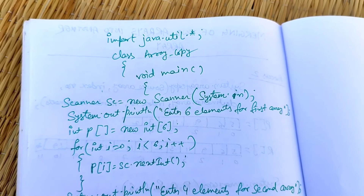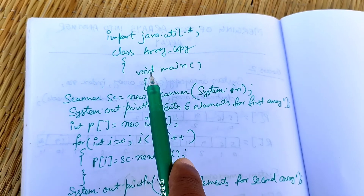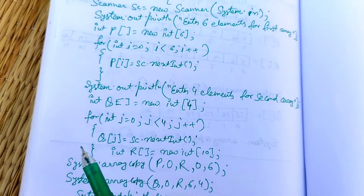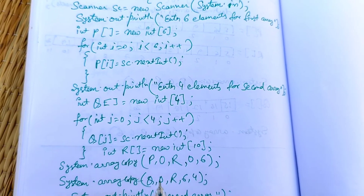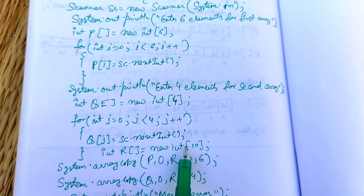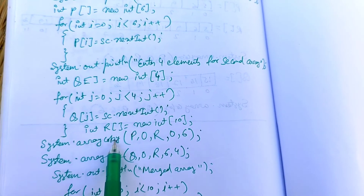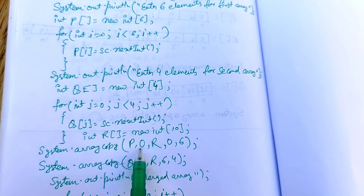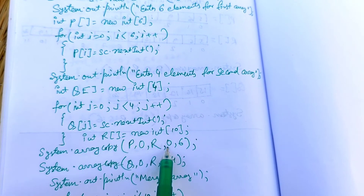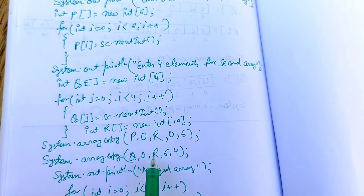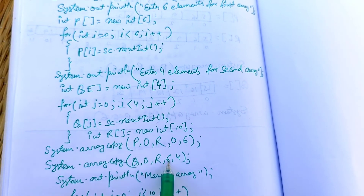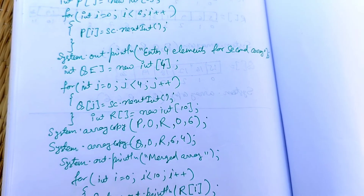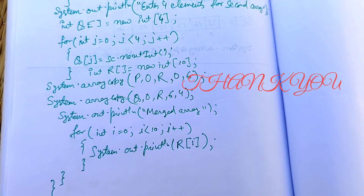For the program, first import java.util.*. Take input for six elements in p and four elements in q, then create array r. Write two System.arraycopy lines: first System.arraycopy(p, 0, r, 0, 6), then System.arraycopy(q, 0, r, 6, 4). Finally, print the merged array.